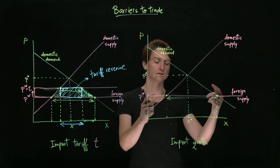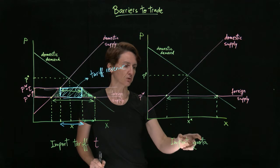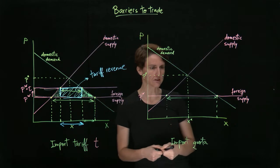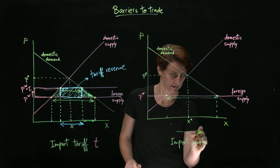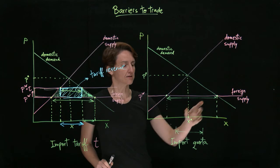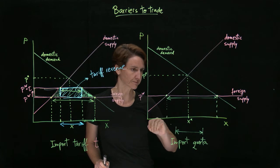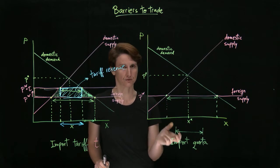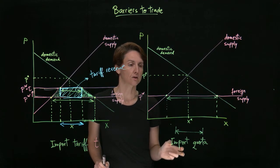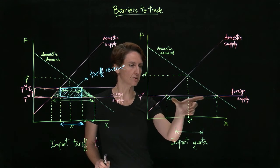A quota will say you can't import this much, you can only import some smaller amount. We could show it as a horizontal segment because we have quantity on the horizontal axis. So let's say that the restriction is as indicated here. So foreign supply is restricted to only spanning this horizontal distance. There are multiple ways of showing it in the graph. The easiest way to look at it is as follows.